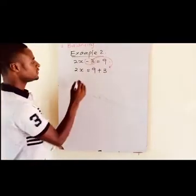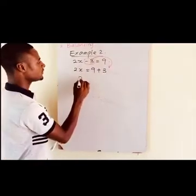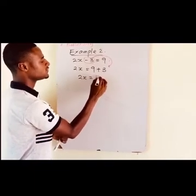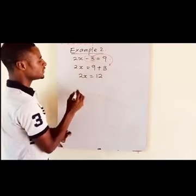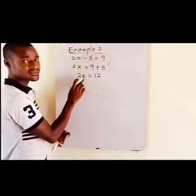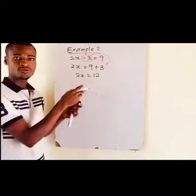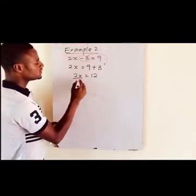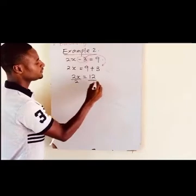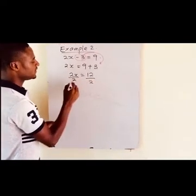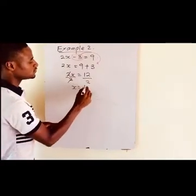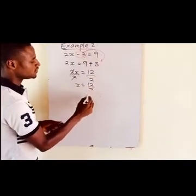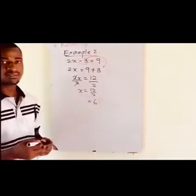So negative 3 moving across the equal sign will change to positive 3. Then we will have 2x is equal to 9 plus 3, which gives us 12. We want to find the value of x so we divide through by the coefficient of x, which is 2. Then x is equal to 12 divided by 2, which gives us 6.